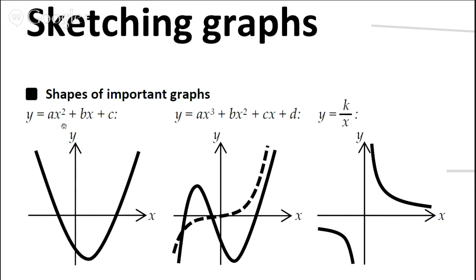So you've got a quadratic graph — there are some important things you need to know about it. First of all, it's got one hump. The proper word you should know for that is a vertex — it's like a corner, but not a very pointy corner. That's the vertex of this graph. It's only got one vertex, as opposed to a cubic graph which usually has two vertices, but I'll talk about cubic graphs in a minute.